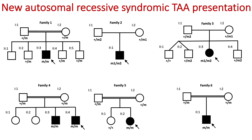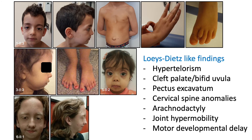In total we identified six families in which this recessive presentation was present. The phenotype of those patients resembles Loeys-Dietz-like findings, including widely spaced eyes or hypertelorism, cleft palate and bifid uvula. There are also many skeletal findings including pectus deformities such as pectus excavatum, cervical spine anomalies as observed in about one-third of LDS patients, long fingers or arachnodactyly, and joint hypermobility. Most patients also present with motor developmental delay, probably related to neuromuscular hypotonia.